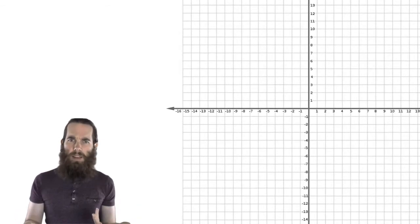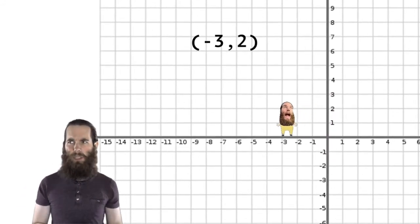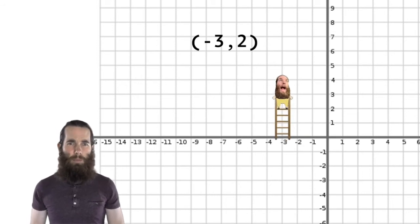And it's exactly the same here. If I have negative 3, 2, I first walk over to negative 3. So I walk to the left, to negative 3, put my ladder down and walk up to 2. There's my point.